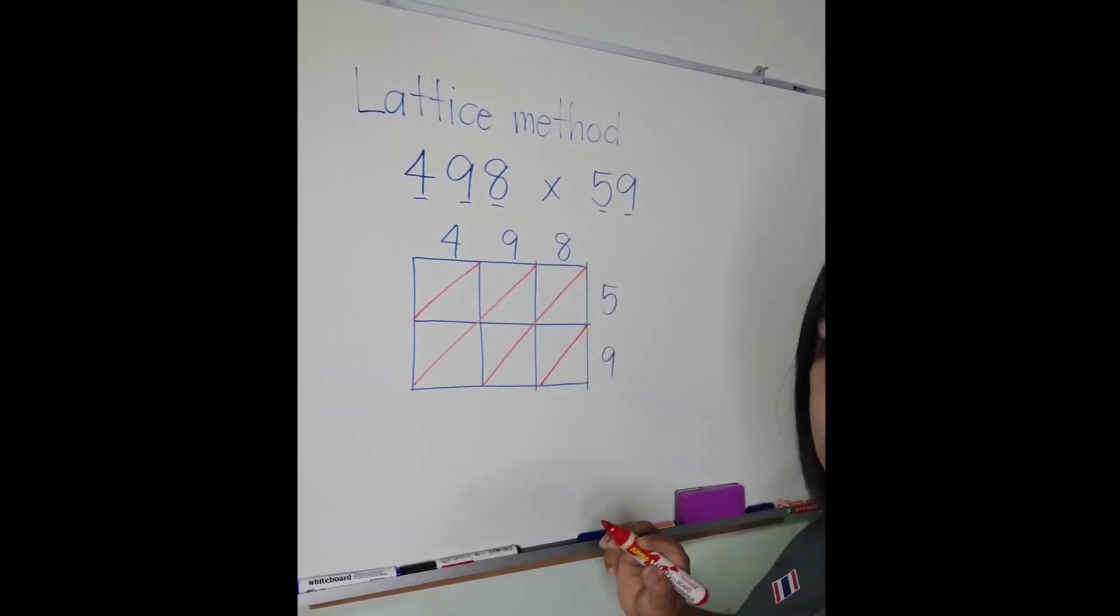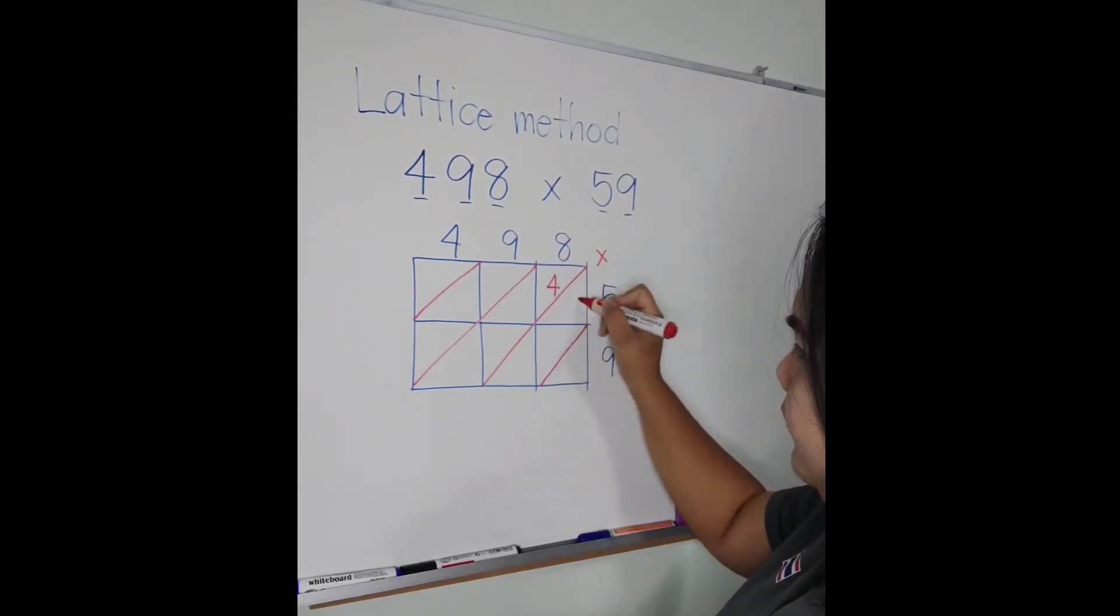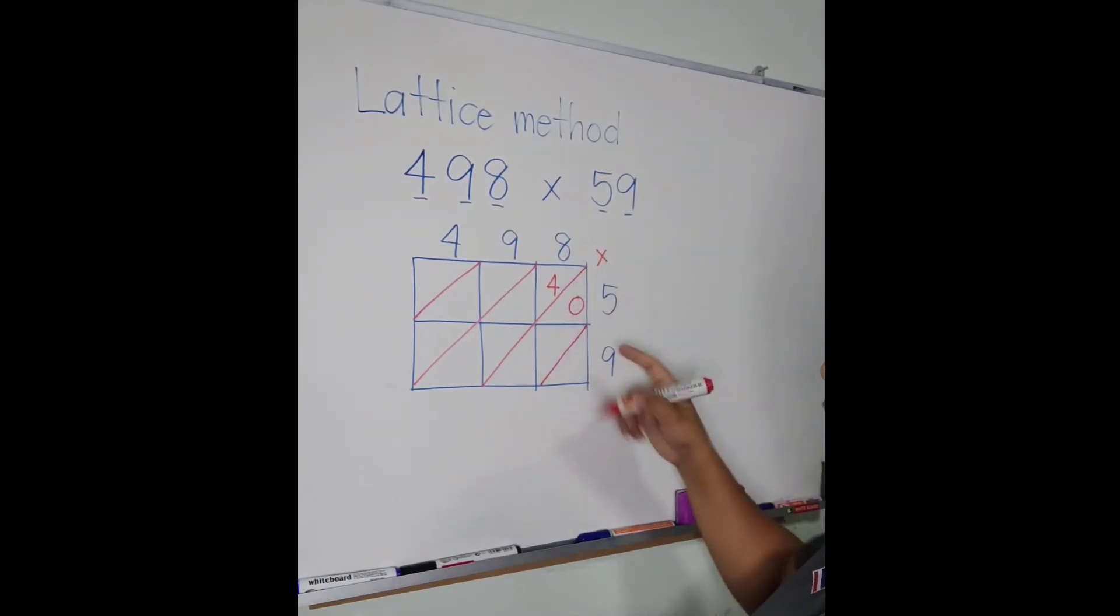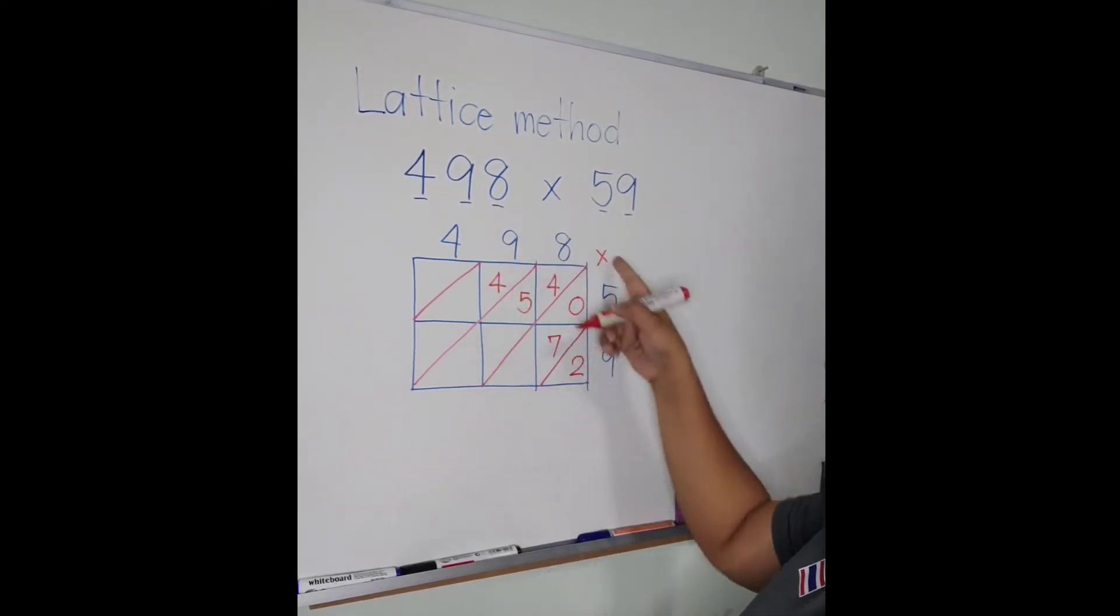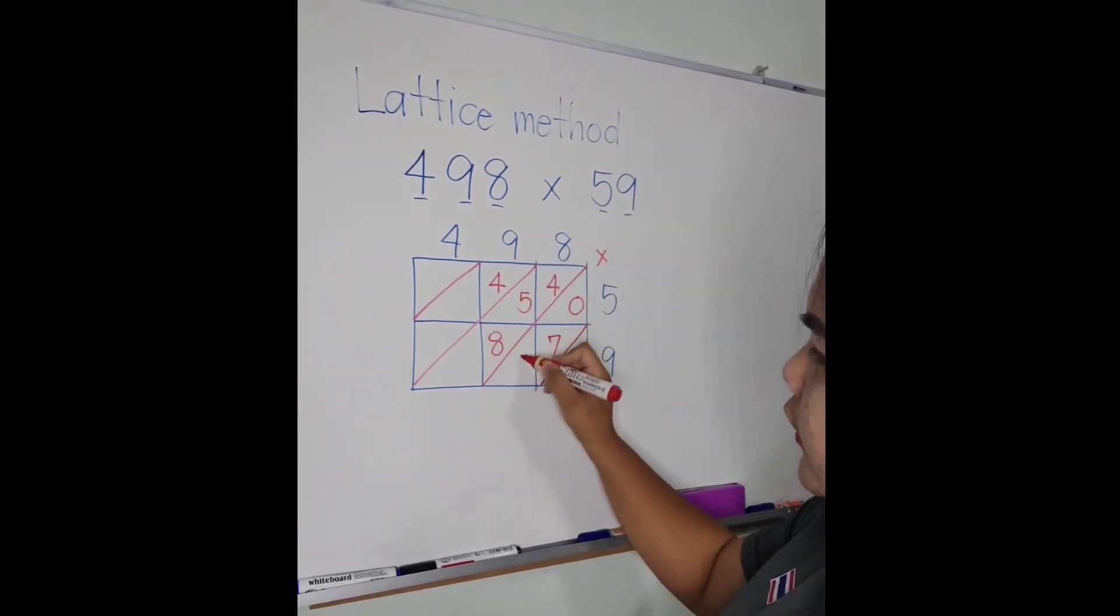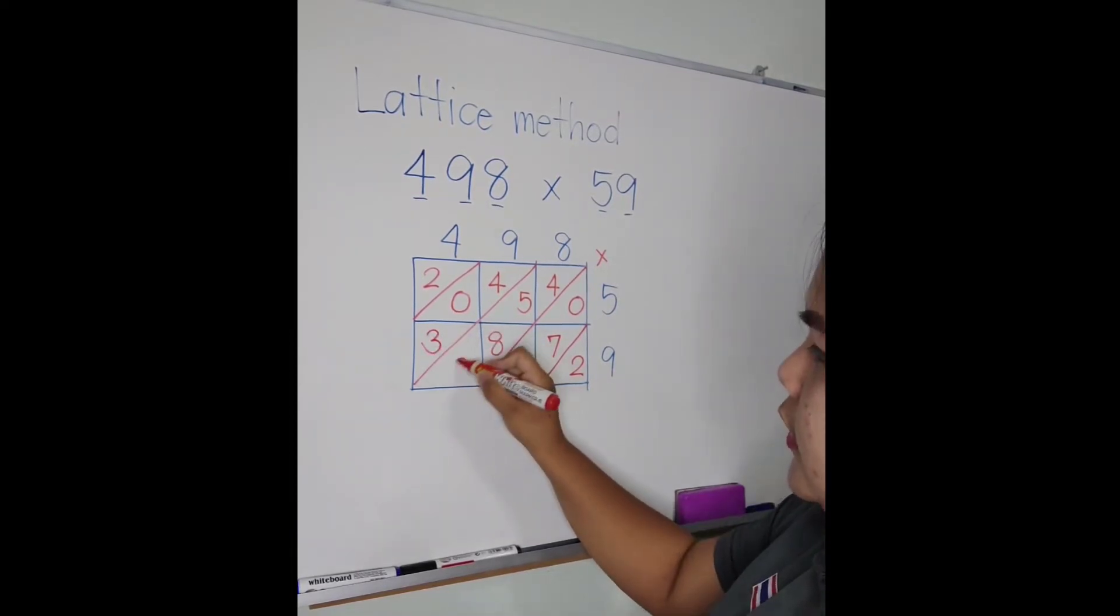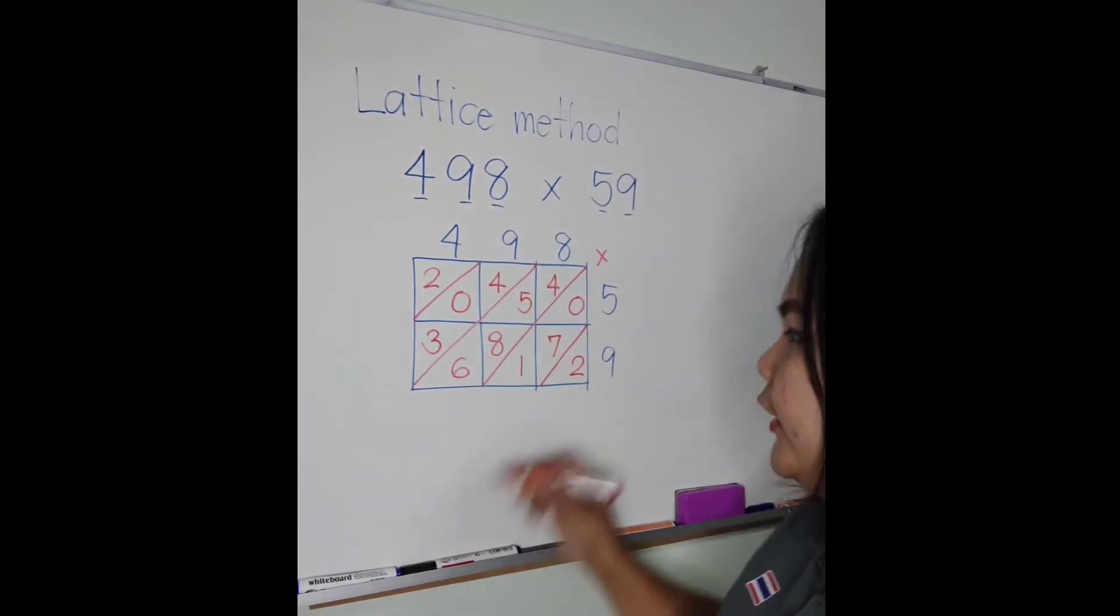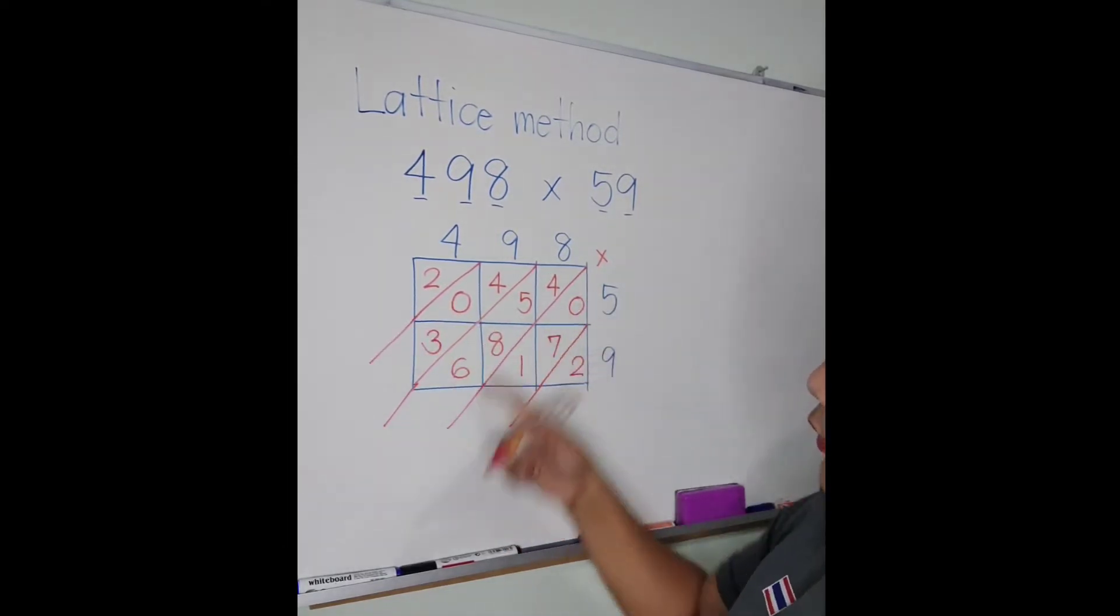So 8 times 5 is 40, 8 times 9 is 72. 9 times 5 is 45, 9 times 9 is 81. 4 times 5 is 20, 4 times 9 is 36. Then after that, you are going to add by their diagonals. So let's try to add.